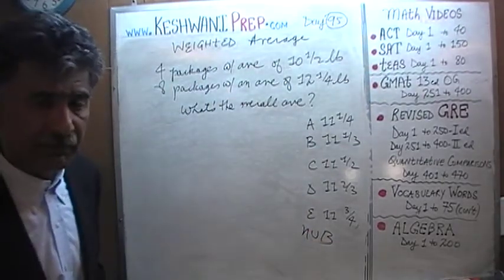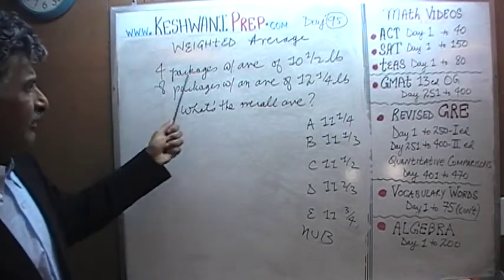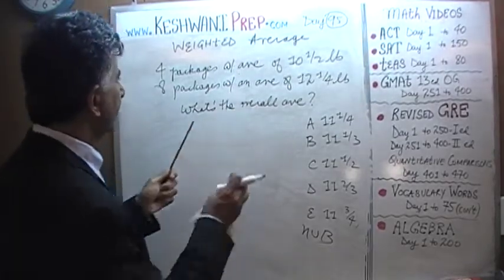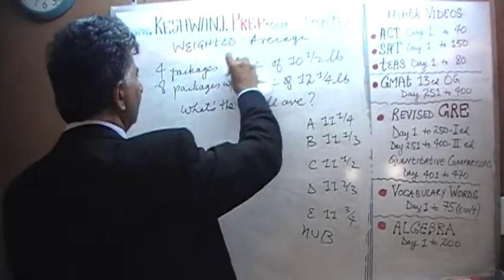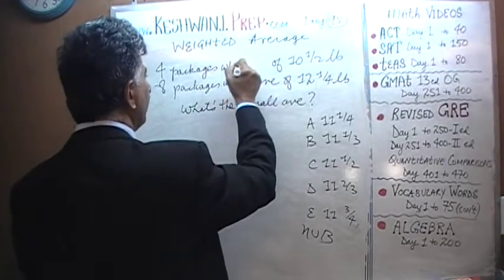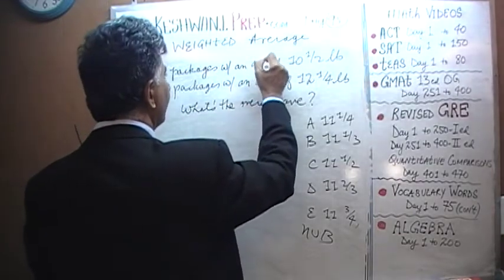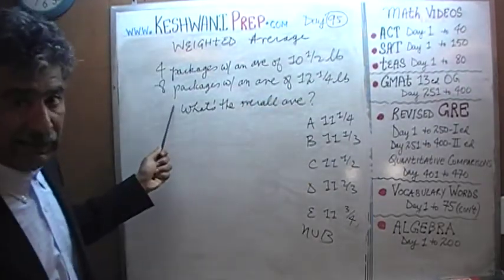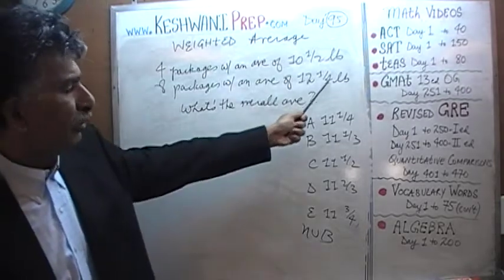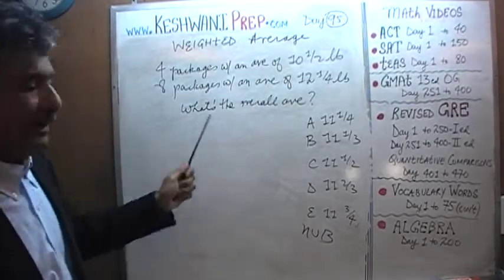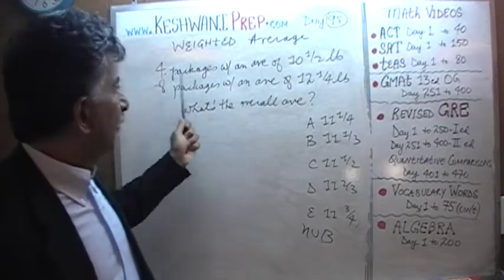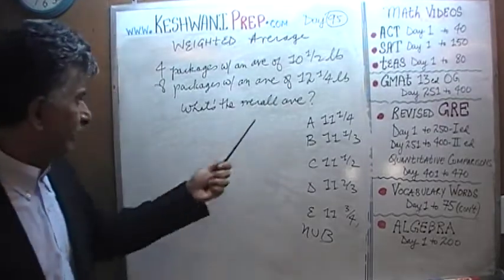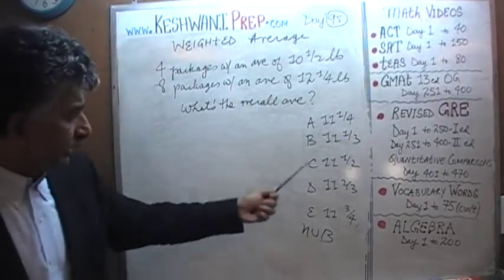What we are told is that we are mailing 12 packages. Four of those packages had an average of 10.5 pounds. We mailed eight more packages with an average of 12.25 pounds. The question is very simple, very straightforward. The question simply is, what's the overall average? And here are the five answer choices.